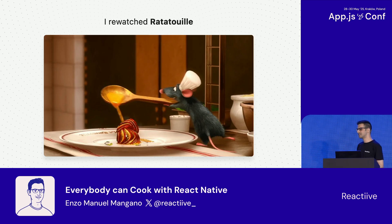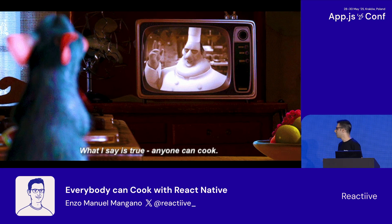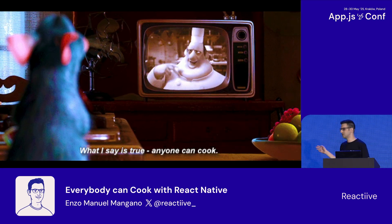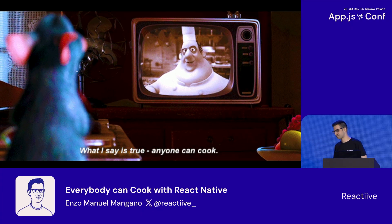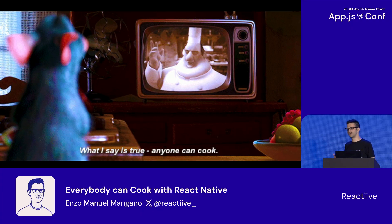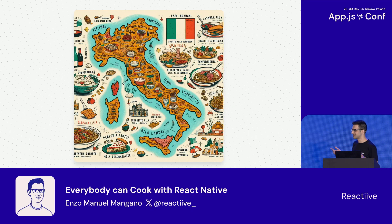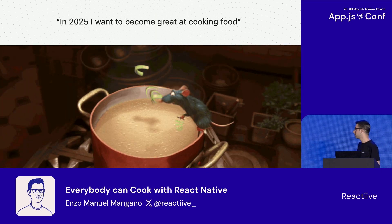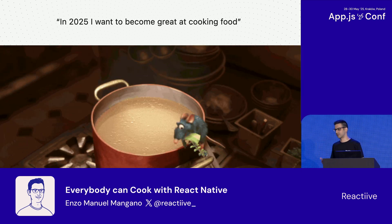Ratatouille talks about the story of Remy, a mouse that dreams about becoming a great chef. There is a scene where Chef Gusteau is telling everyone through the television that anyone can cook. And this scene really touched my heart somehow, because I'm Italian, as you can easily spot from my accent. And in Italy, we have a strong culture around food, but unfortunately I'm so bad at cooking. So I decided that for my New Year resolutions 2025, no matter what, I want to become great at cooking food.